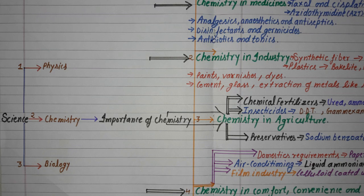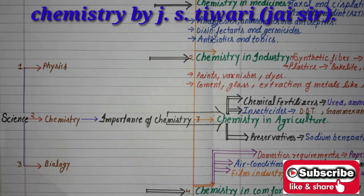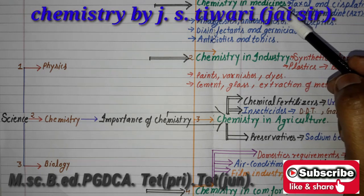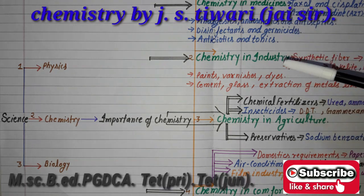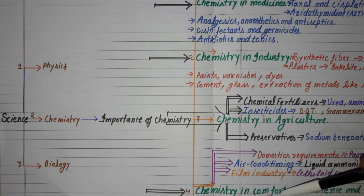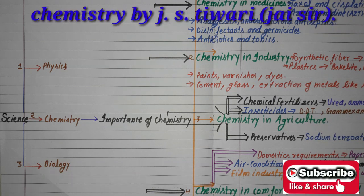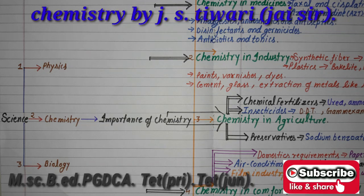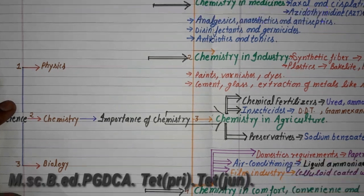The main areas of importance of chemistry are: chemistry in medicine, chemistry in industry, chemistry in agriculture, chemistry in comfort, convenience and pleasure, and chemistry and energy resources.